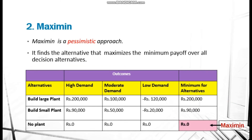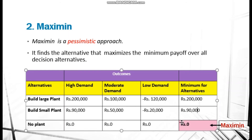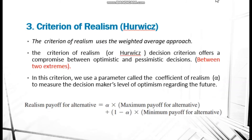The second method, maximin, is the opposite of maximax — it is a pessimistic approach. It takes the minimum payoff of each alternative and selects the maximum among those minimums. From the Kumar Sheets payoff table, the minimum payoff among all three alternatives is zero, from the no-plant option. So under this pessimistic approach, the decision would be to build no plant, accepting zero profit but also zero loss.